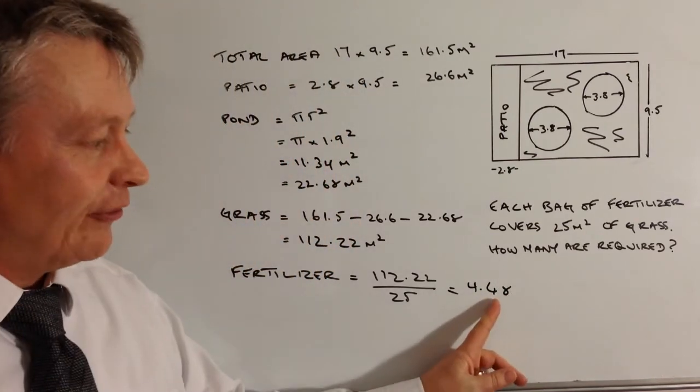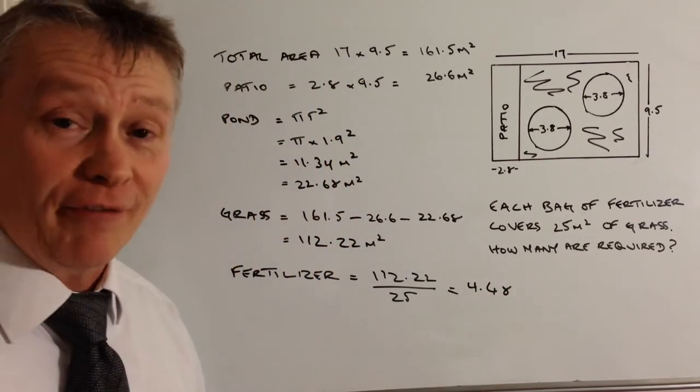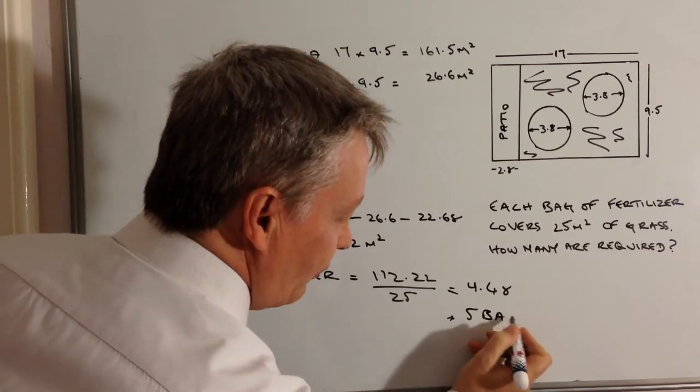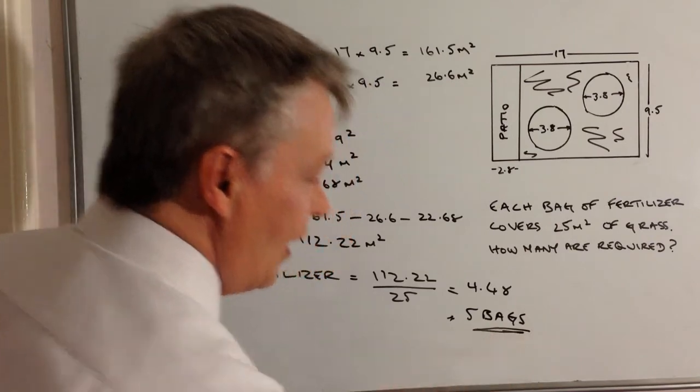If you pop that into a calculator you're going to come out with 4.48. Okay, well you can't buy .48 or half a bag of fertilizer so it's going to be five bags that are required in total.